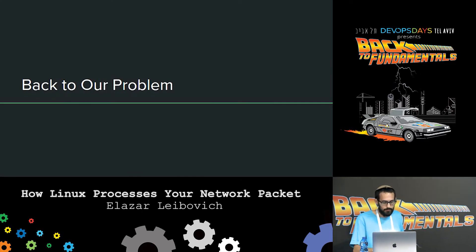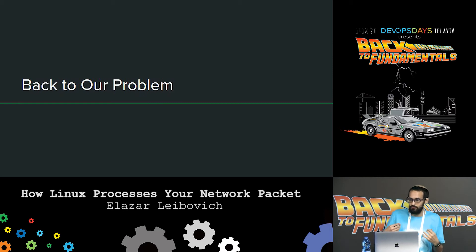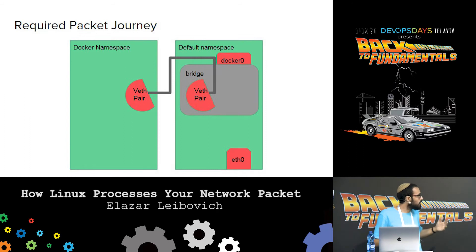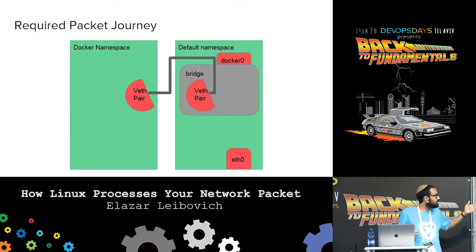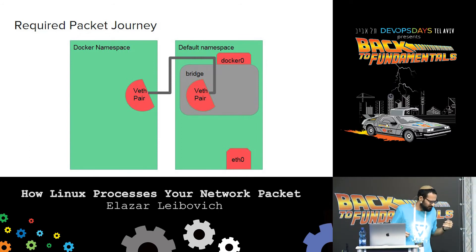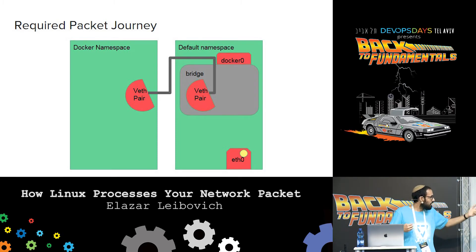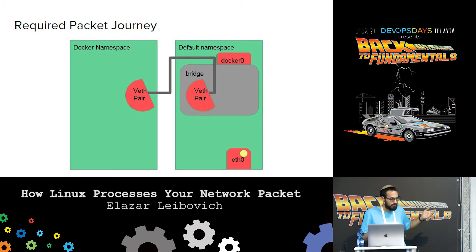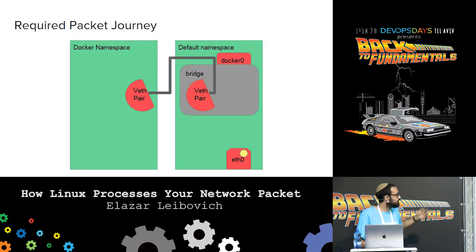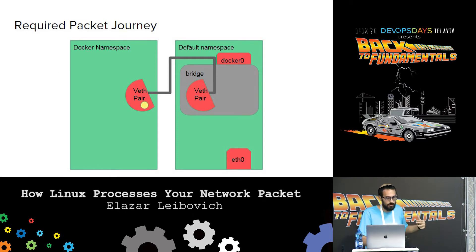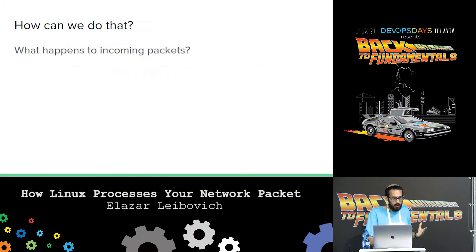Now back to the problem. We don't want to reach from the laptop to the container — we can already do that. We need to reach from our network interface to the bridge, because our boss sends this packet to our laptop, those packets are received by our network card — which is often eth0 — and we need to somehow move the packets from eth0 to the Docker 0 bridge. And then, as we said before, it would reach the container via the usual path.